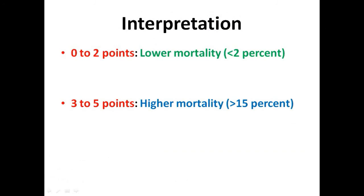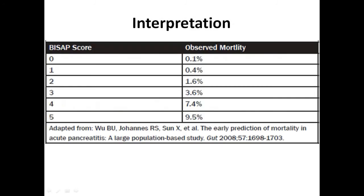If the patient has zero to two points, the mortality is low — less than 2%. However, if the total score is three to five, there is high mortality of more than 15%. In a study published in 2008 in Gut, a BISAP score of zero was associated with 0.1% observed mortality, whereas a score of five was associated with 9.5% observed mortality. This confirms that a higher BISAP score is associated with higher mortality in patients with acute pancreatitis.